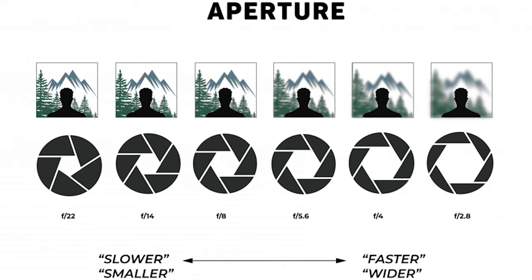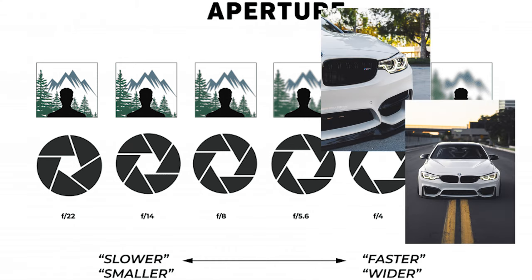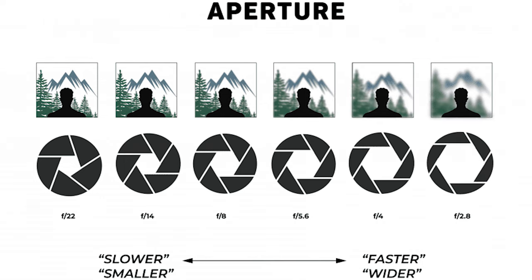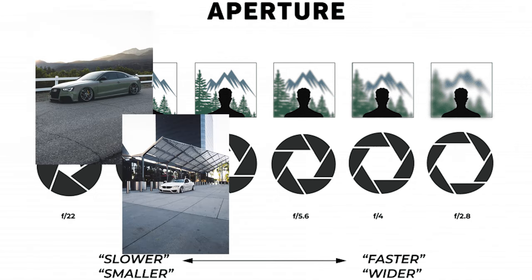The end result is that a lower aperture number is going to have a shallow depth of field, meaning the subject will be in focus, but everything else in the background will be out of focus. A higher aperture number will have a greater depth of field, allowing an entire image to be focused, not only the subject.